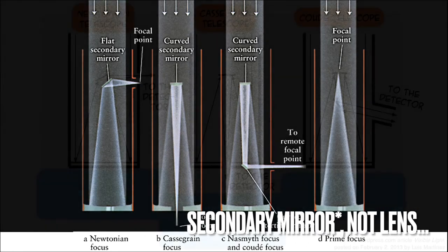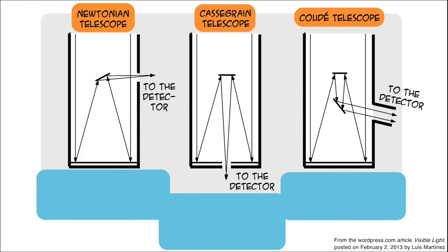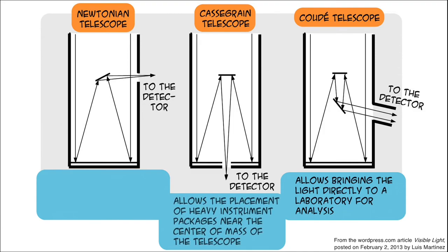But why bother having so many designs for reflecting telescopes? Well, there are benefits to each. The Cude focus can redirect incoming light rays immediately into a lab for further analysis without having to attach the equipment directly to the telescope or even be monitored by an astronomer. The Cassegrain focus allows for heavy instruments necessary for data reduction to be attached directly onto the telescope near its center of mass so that it remains balanced.